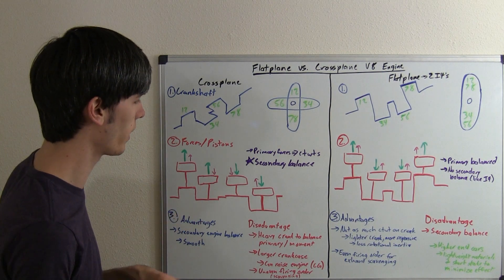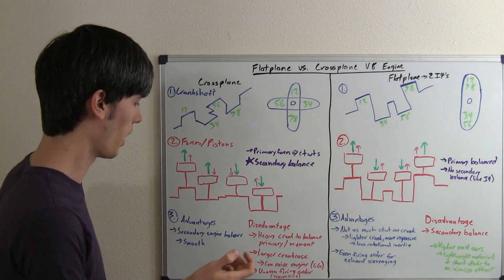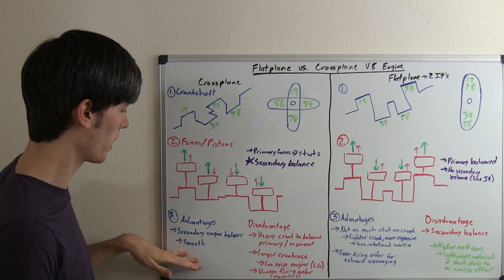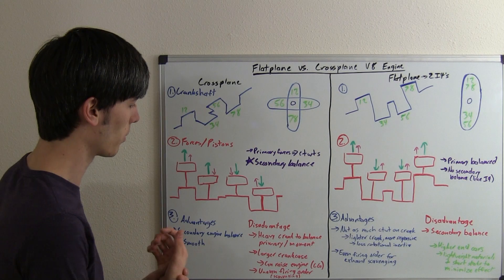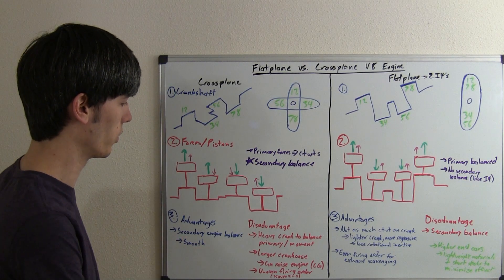So let's talk about advantages and disadvantages of each type. So cross-plane V8, as we said, secondary engine balance, so it's got a smooth engine, little vibration. So that's why it is used.